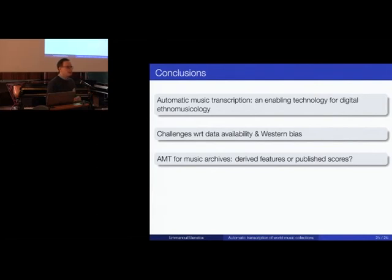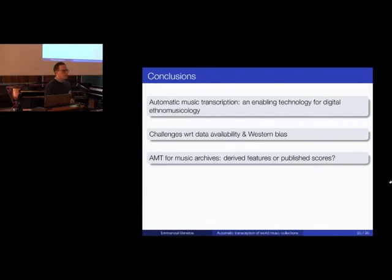Before, with existing IP regulations, we could easily share derived features with the wider public as long as those features could not lead back to the original audio. But when you are creating a system that can output proper staff notation, from the perspective of a library this might be considered publishing. A score is no longer a derived feature — it's something more than that. There are IP issues: who owns the IP? Is it the composer, the performer, the person who wrote the software, or the training data? This is still an open problem we have to deal with as transcription approaches become more and more usable.